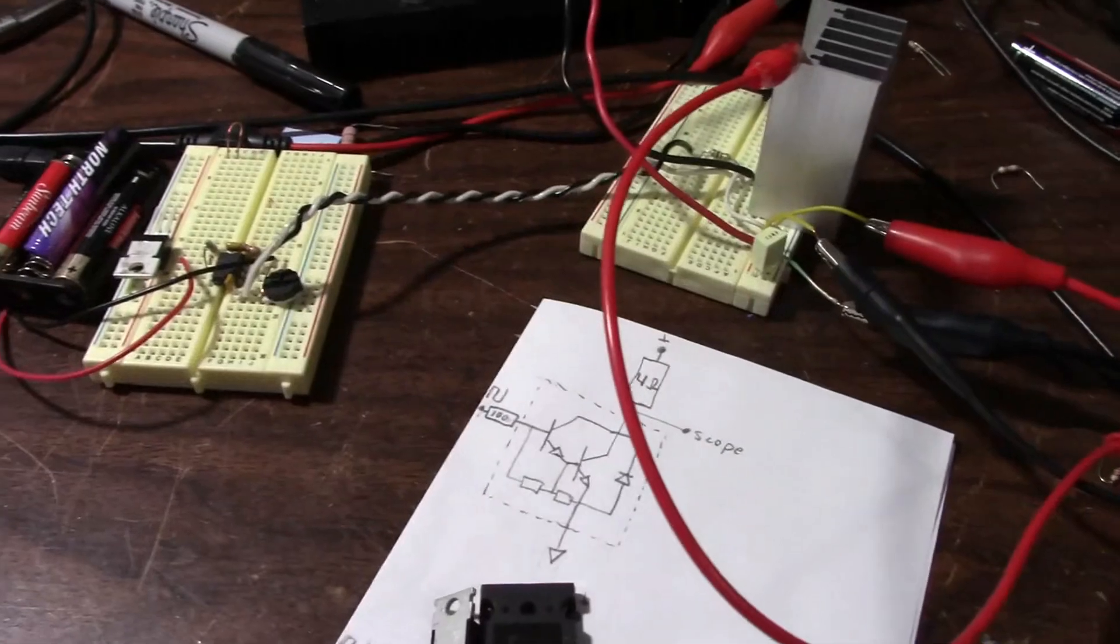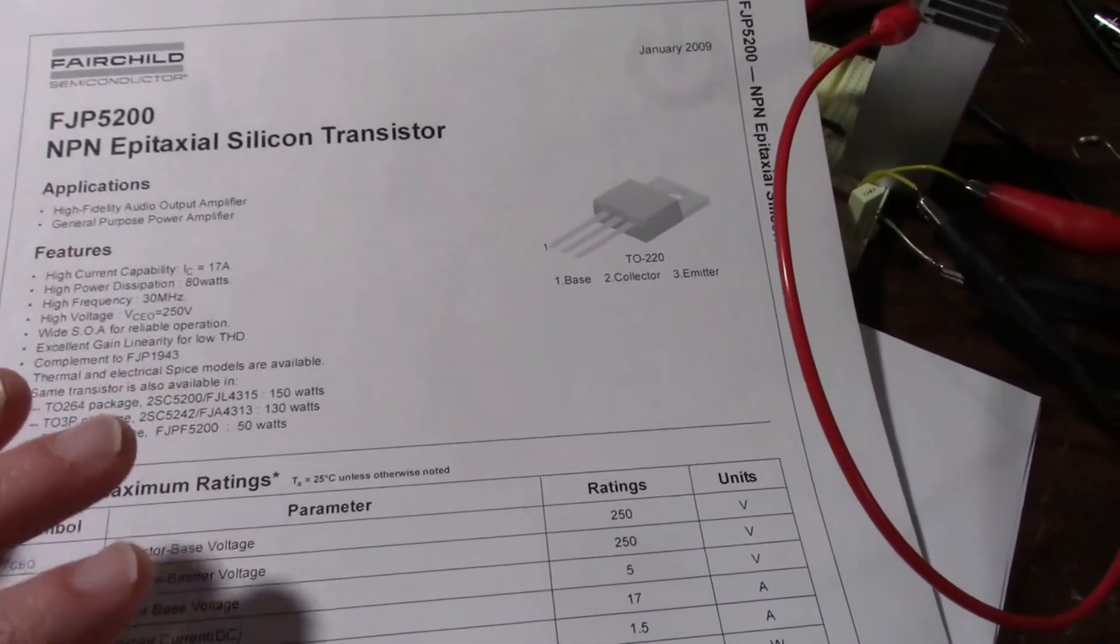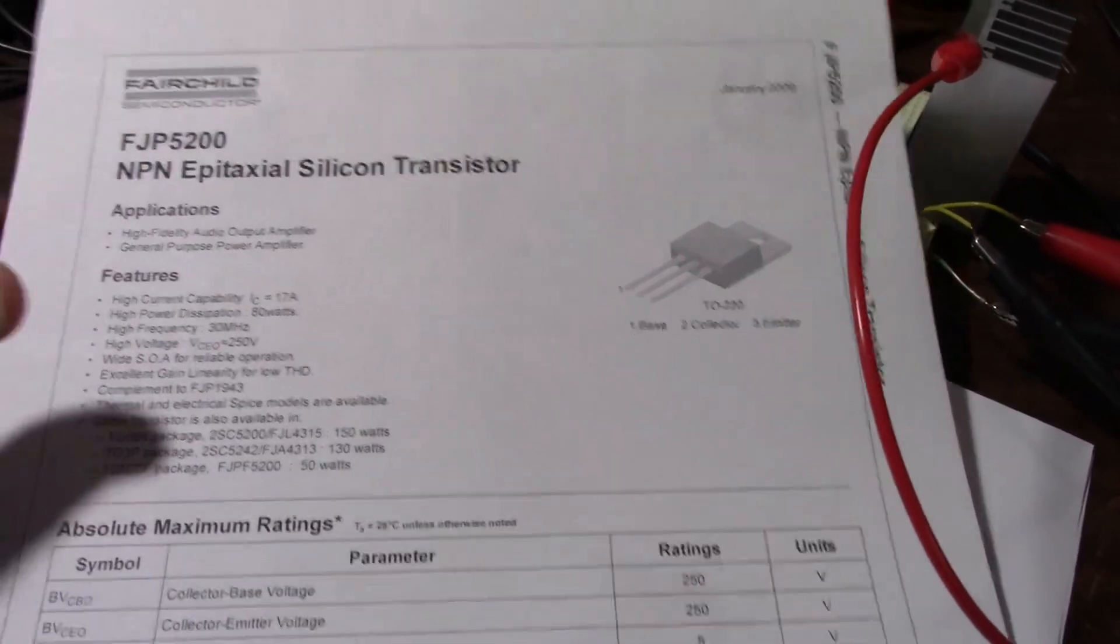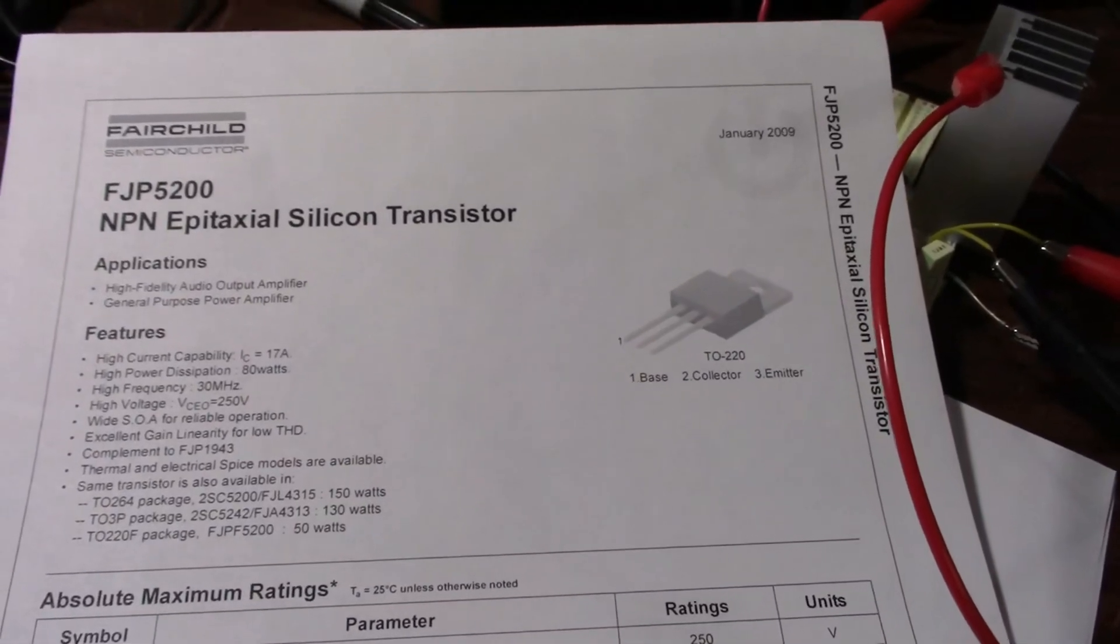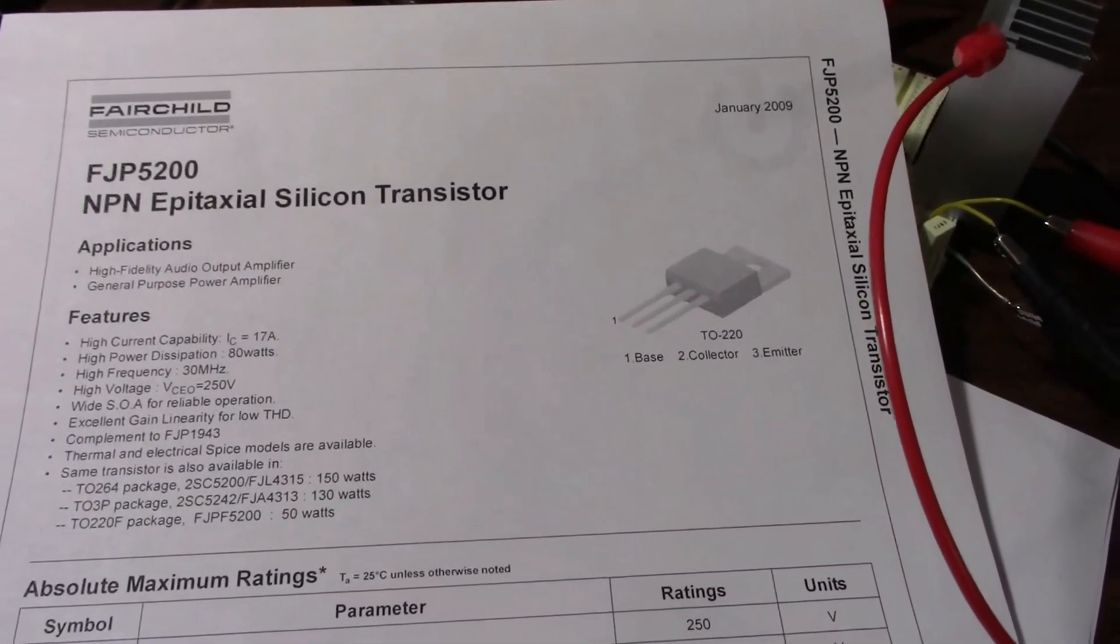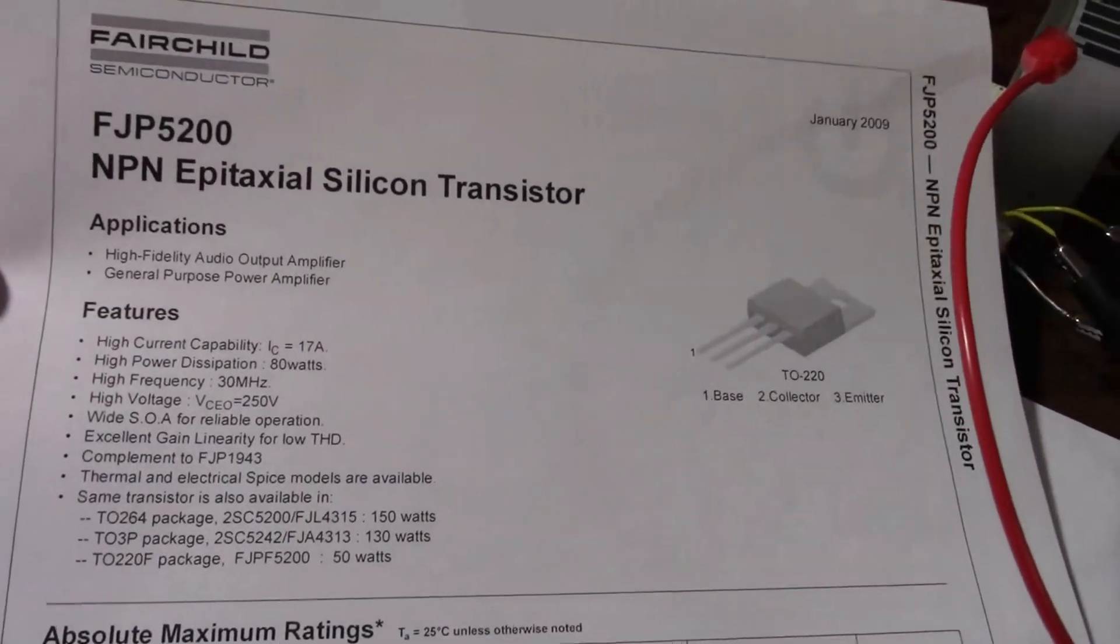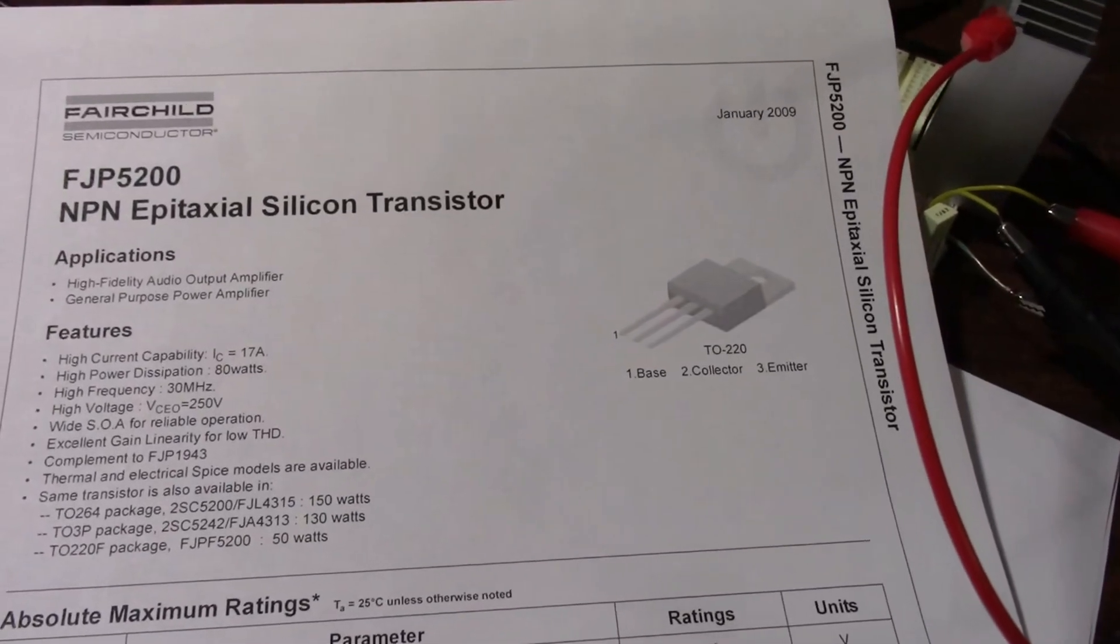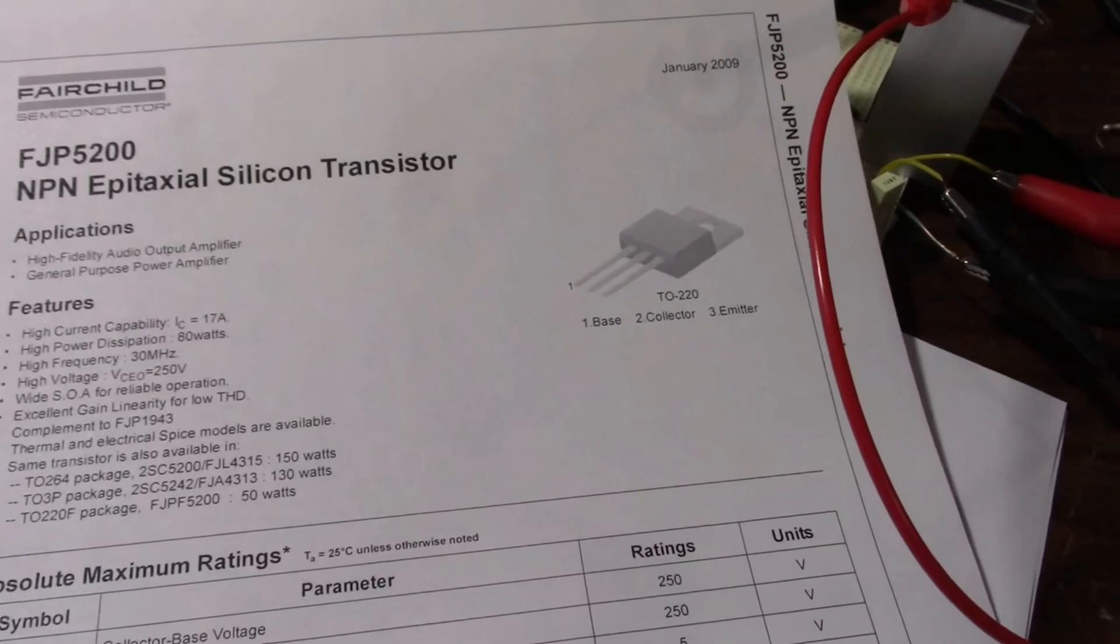The thing is, I want to use the TO220 version on the Easy Amp because it's a lot cheaper. So what do they do? Every time I find a nice component I like, sooner or later they're going to discontinue it. And that's what happened with the FJP5200. They went and discontinued it.